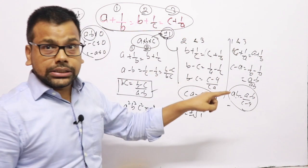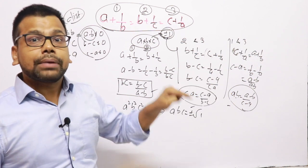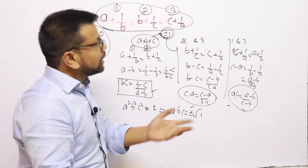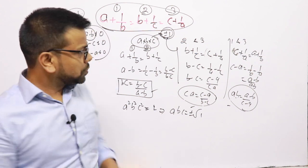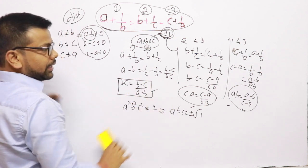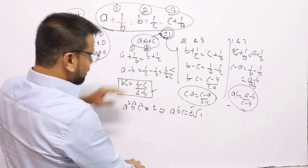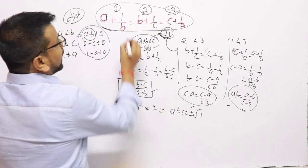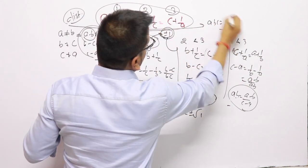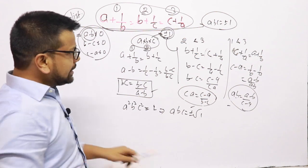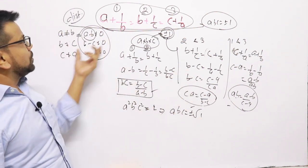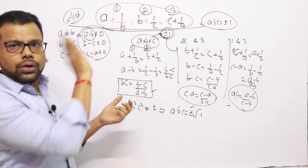This is the advanced conditional algebra you must know before your exam. In the options, if 1 appears, tick 1; if −1 appears, tick −1; if ±1 appears, tick ±1. Please note this concept — if this condition is given and the values are distinct, then abc = ±1. This is pre-knowledge you must have before your exam.